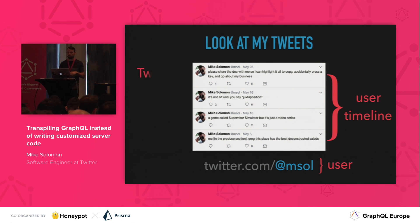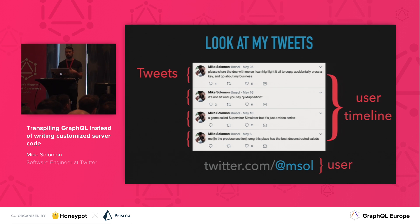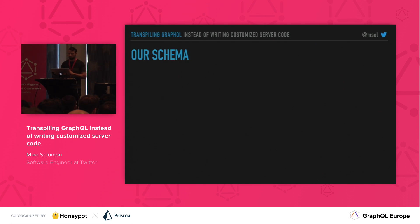We call this all together the user timeline. The user timeline is made up of tweets. So we've got a user, that user has a user timeline, and a user timeline is made up of tweets. Let's move on and see how we might model this in GraphQL by looking at a really simplified schema definition.